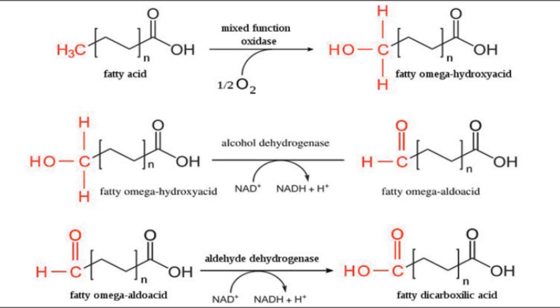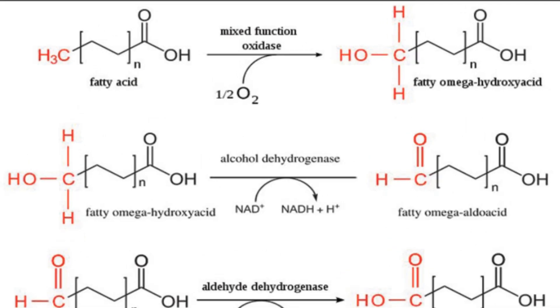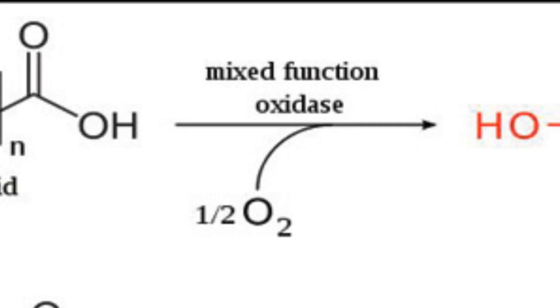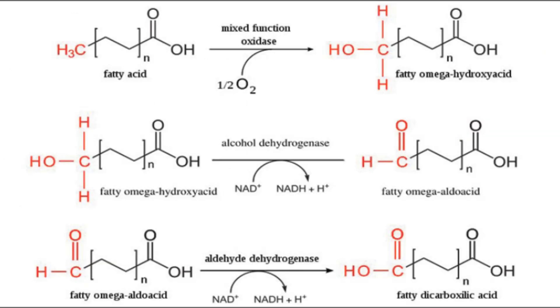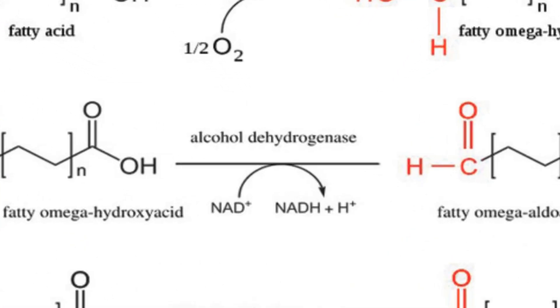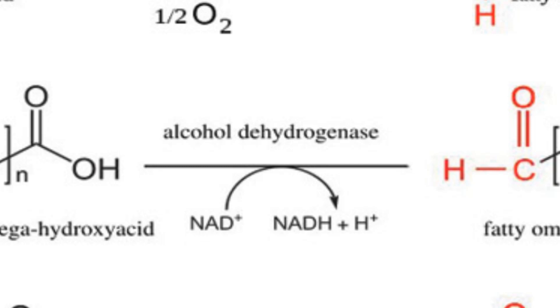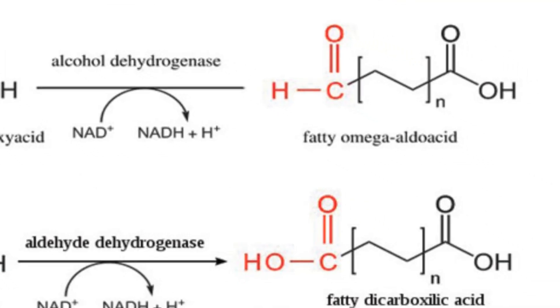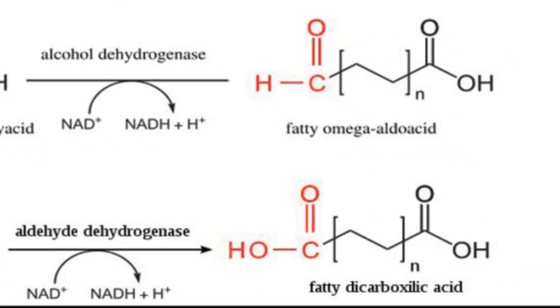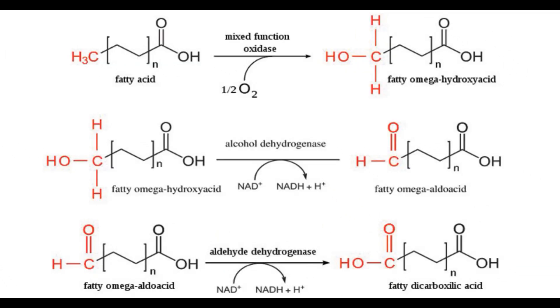Three reactions are important for omega oxidation. First, the fatty acid goes into fatty omega-hydroxy acid, and for that you need mixed function oxidase. After that, it goes to fatty omega-aldoacid with the help of alcohol dehydrogenase. After that, you need aldehyde dehydrogenase to get the final fatty dicarboxylic acid.